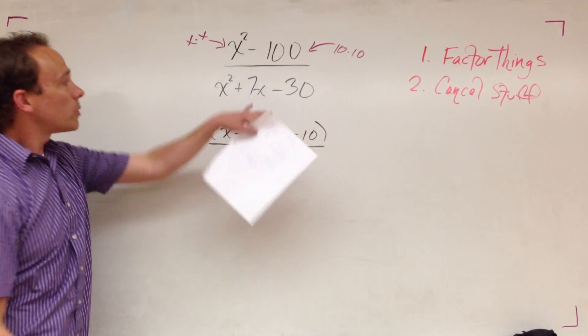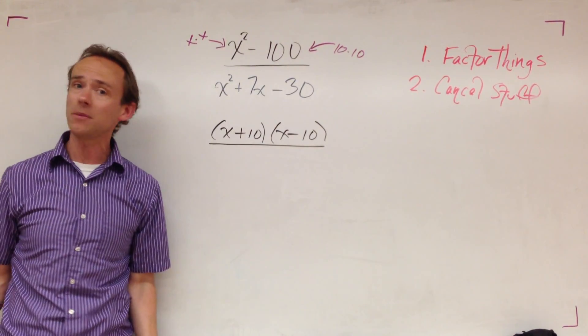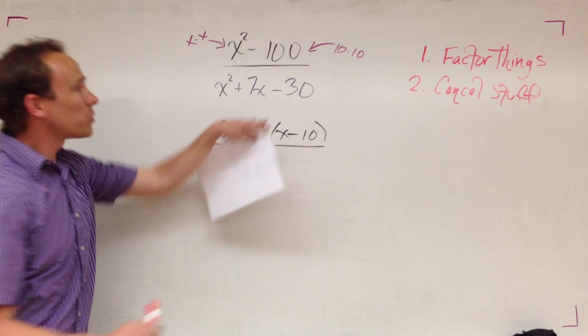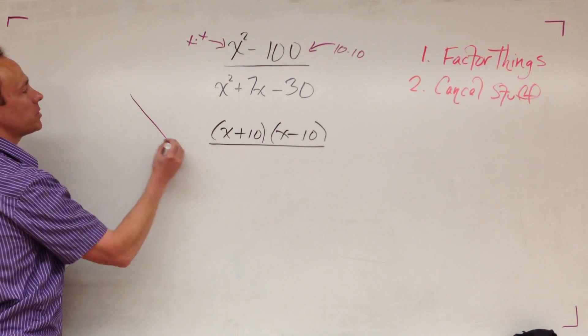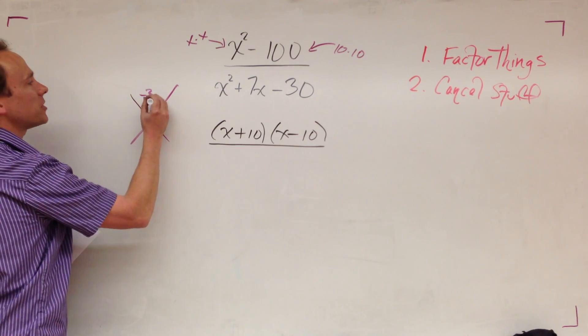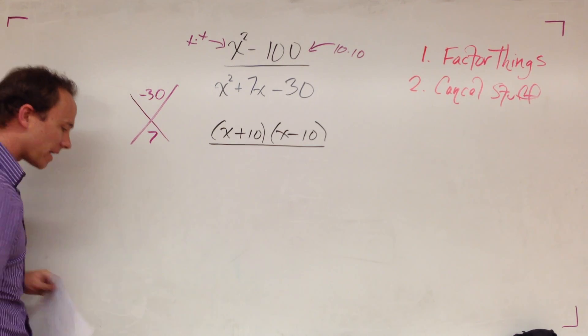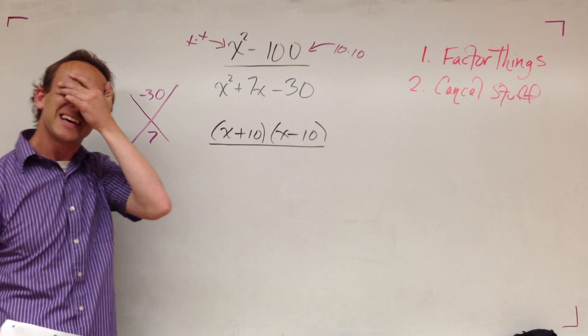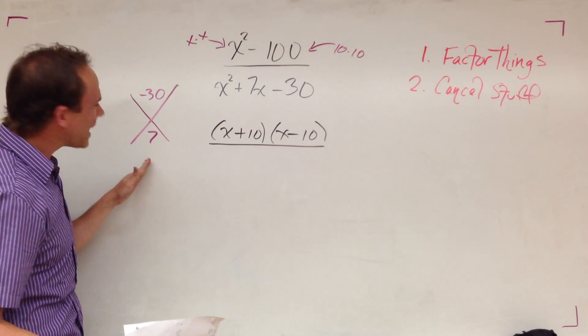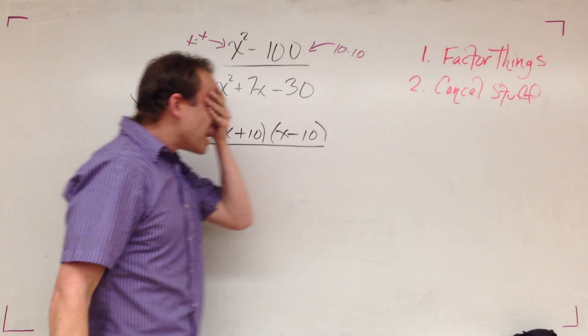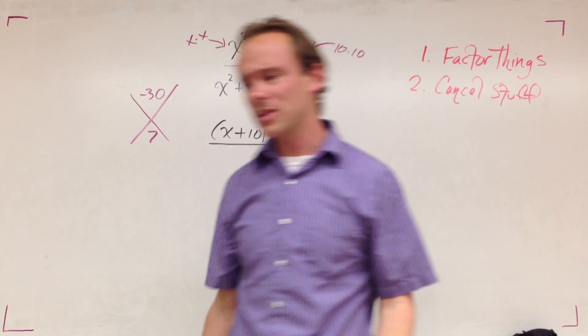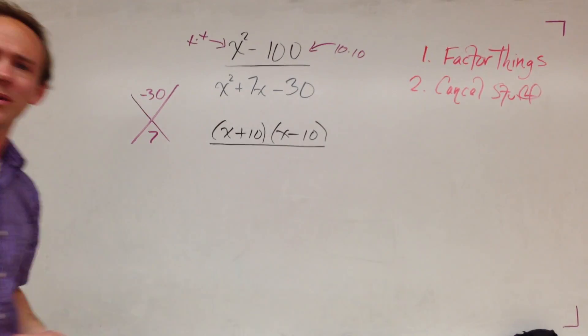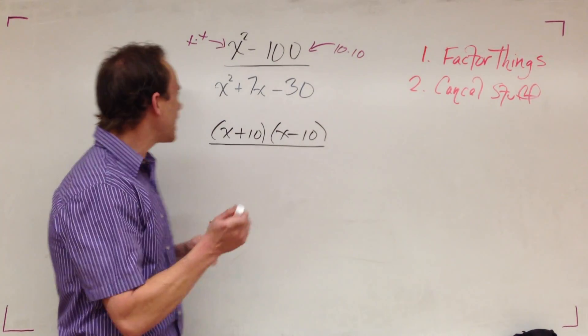We go down to the denominator, we got a trinomial, that's three terms. Once again we're going to attack this with x marks the spot. I got negative 30 on the top, I got 7 on the bottom. So I need two numbers that multiply to give me negative 30 but add to give me 7.